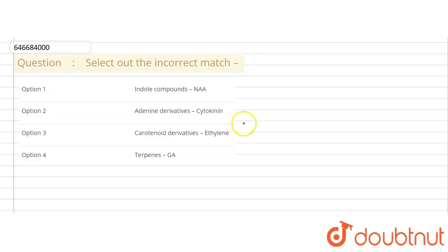In the first case, NAA... sorry, IAA is an indole compound and it acts as a growth promoter for the plant.